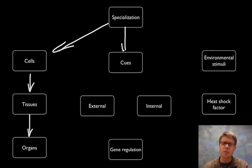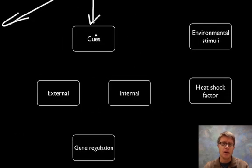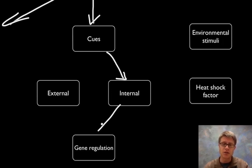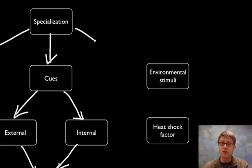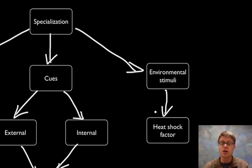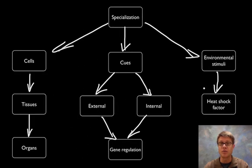How a cell decides what cell it's going to become is based on cues or signals that it's getting. Some of those signals come internally from the cell itself, and a lot of the time that's based on where the cell is. That's going to turn genes on or off, determining what cell it becomes. But there are also external signals — chemicals coming from adjacent cells that are also turning on genes. Cells can also get signals from outside the body, such as temperature, and can use heat shock factors to make proteins to protect them from heat, or respond to a lack of oxygen.